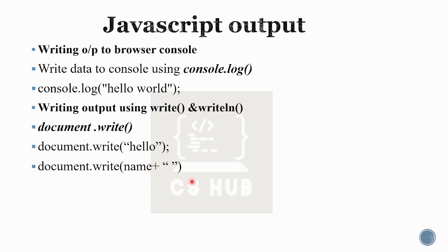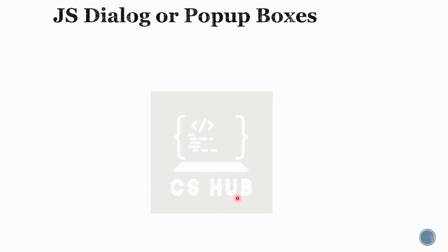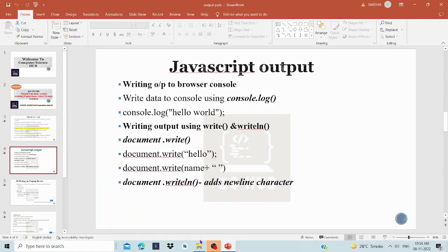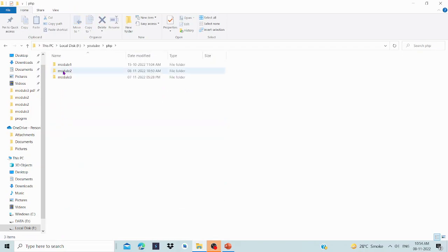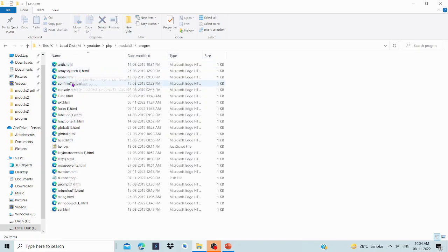We will use document.writeln for a new line. We can also add a new line character using backslash n. Then we will look at the dialog box. Now let's start with a program — we'll call it console.html.